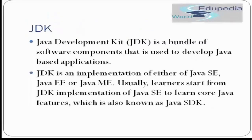Now let's move forward to JDK. JDK is a Java Development Kit. It is a bundle of software components that is used to develop Java-based applications. JDK is an implementation of either Java SE, Java EE, or Java ME. Your JDK could be a Java SE software environment, Java EE enterprise environment, or ME — these are the implementations of JDK.